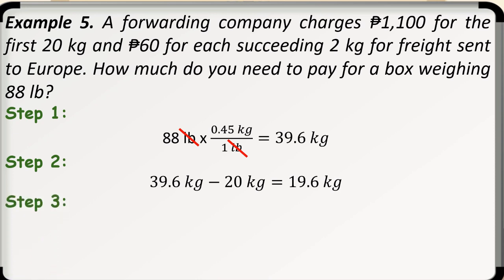Step number 2. We will subtract 20 kilograms from 39.6 kilograms to get the succeeding weight which is 19.6 kilograms. Step number 3. So, 19.6 kilograms is the excess weight and since every 2 kilograms charges 60 pesos, we will divide 19.6 kilograms by 2 kilograms which is 9.8. Then we will multiply it by 60 pesos. So, we have 588 pesos for the succeeding weight.